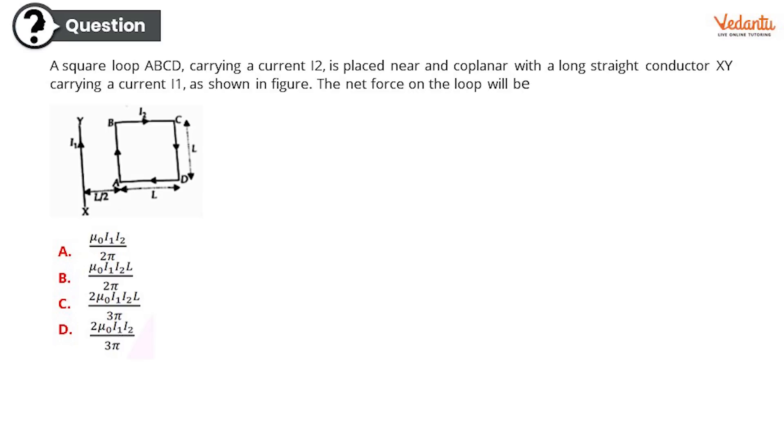All the best guys, here is question number one. A square loop ABCD carrying a current i2 is placed near and coplanar with a long straight conductor XY carrying a current i1 as shown in the figure. The net force on the loop will be how much? Option A: μ₀i₁i₂ / 2π. Option B: μ₀i₁i₂L / 2π. Option C: 2μ₀i₁i₂L / 3π. Or option D: 2μ₀i₁i₂ / 3π.